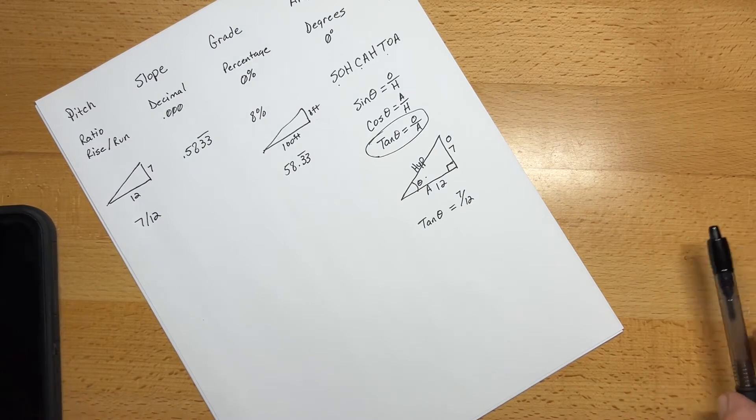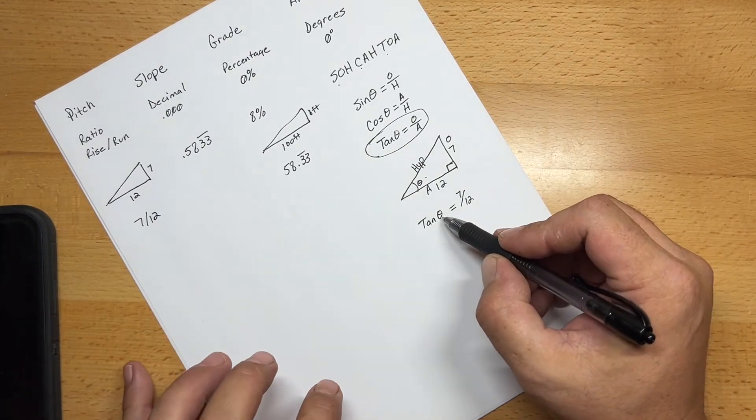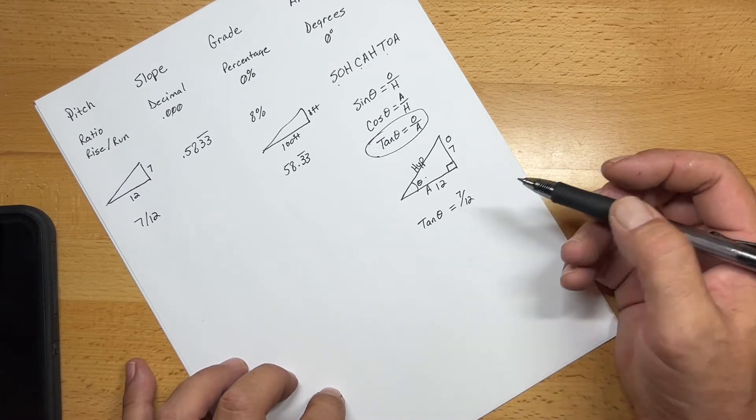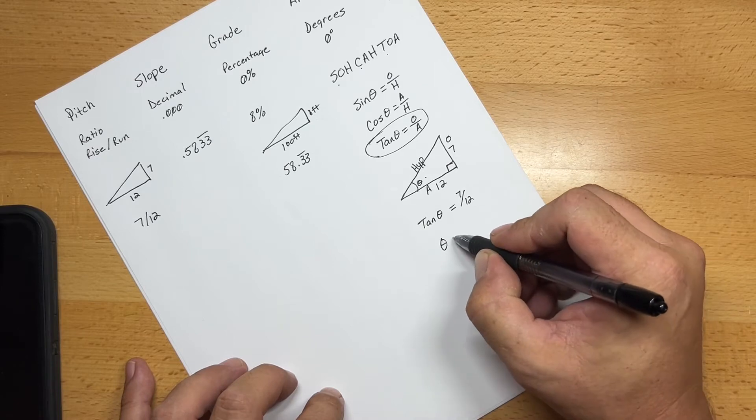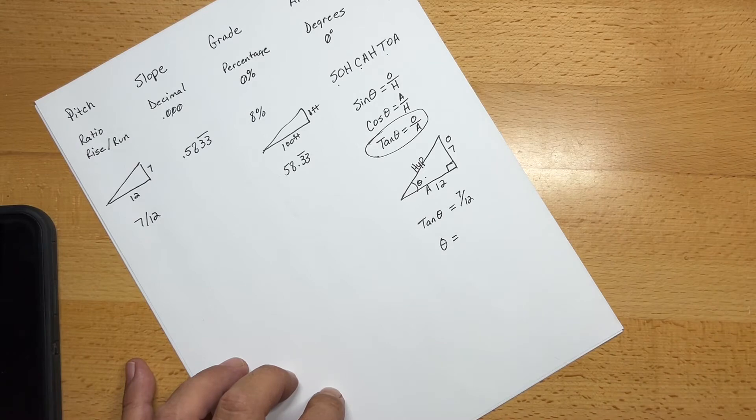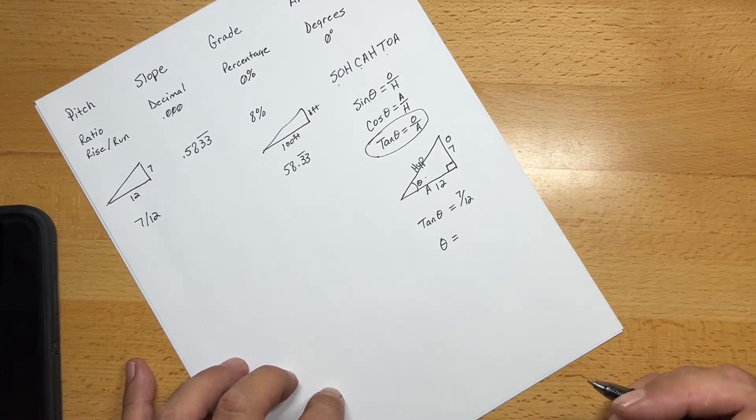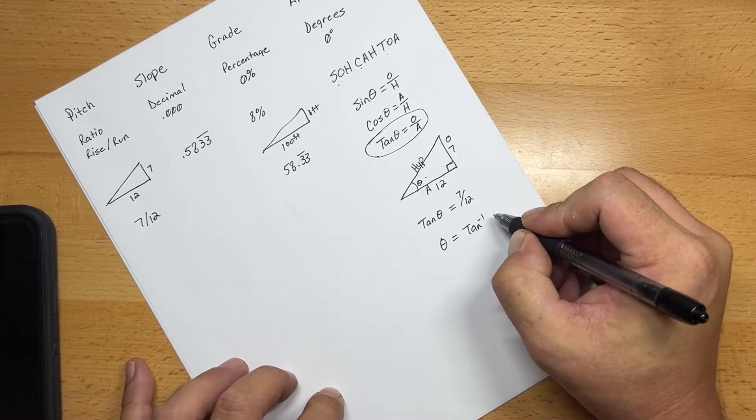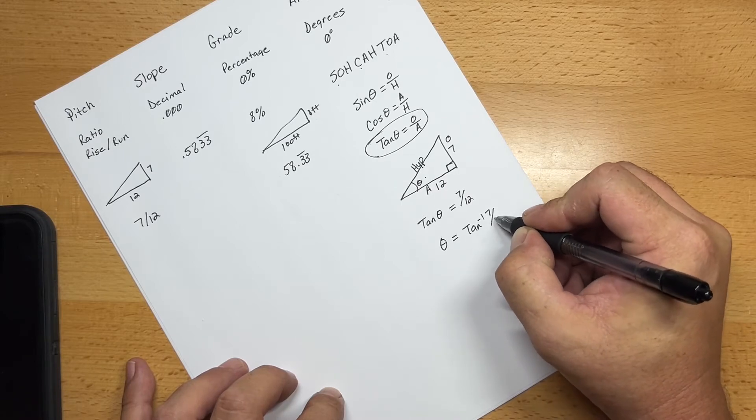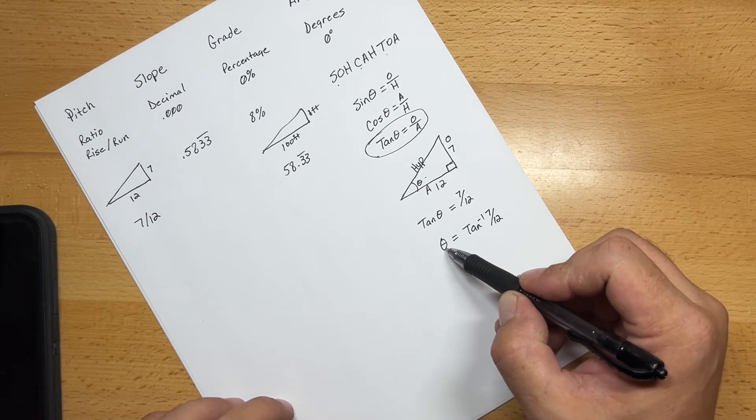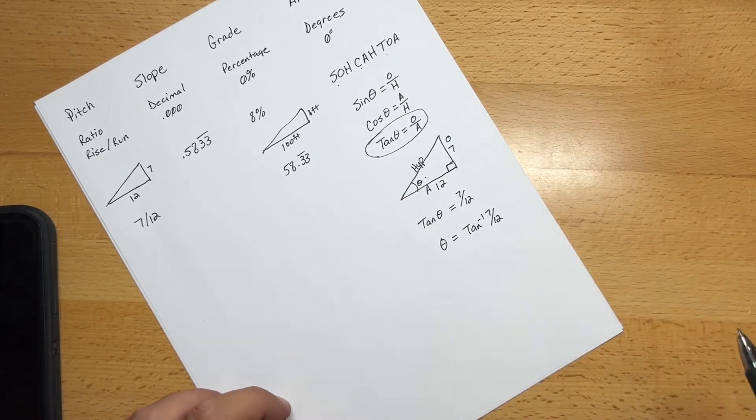So in order to do this, we have to isolate the angle. So what we need to do is take the tangent to the other side of the equation. So when you take the tangent, or cosine, or sine across the equal sign, then it will become the arc tangent, or the arc cosine, or the arc sine. So the way that's written is tangent to the negative 1 of 7 over 12. And now we've isolated the angle, and this is the value that we need to come up with.